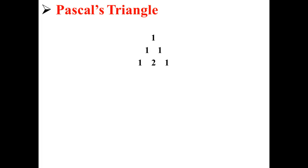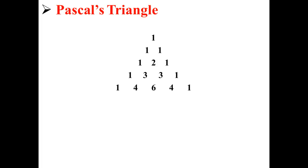Here we have 1, 2, and 1. You can see that we get 1, 2, and 1 by taking the sum of the two terms that are above them. We continue this pattern on and on until we have something called Pascal's triangle.